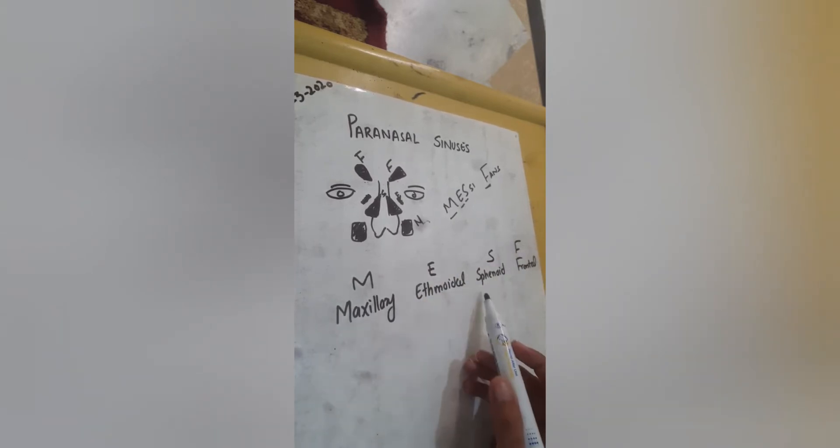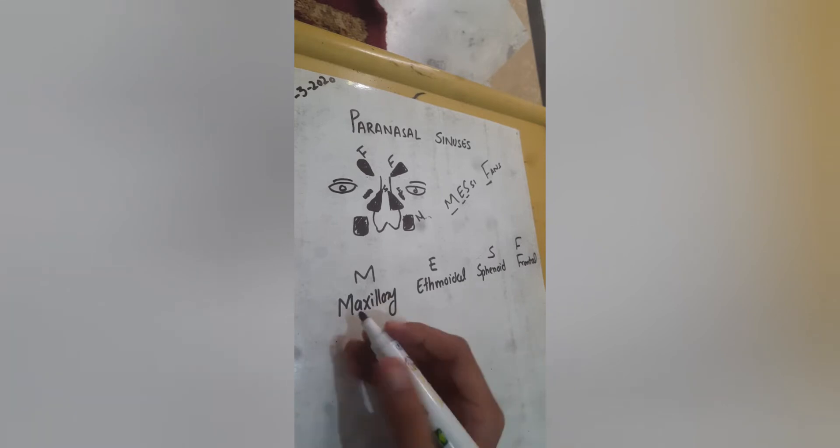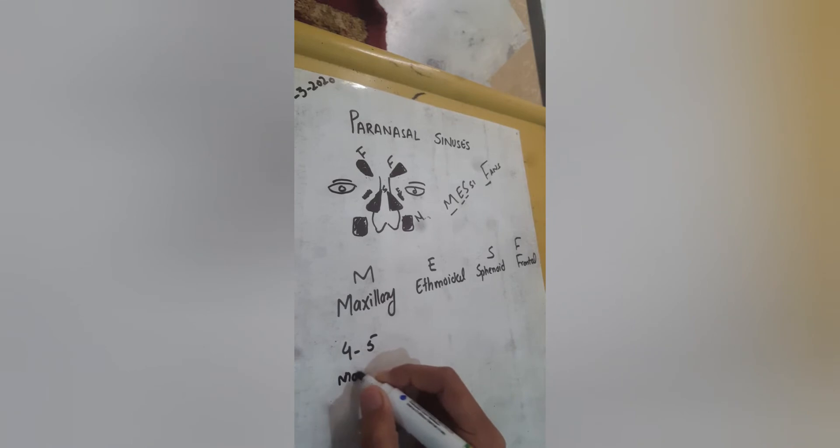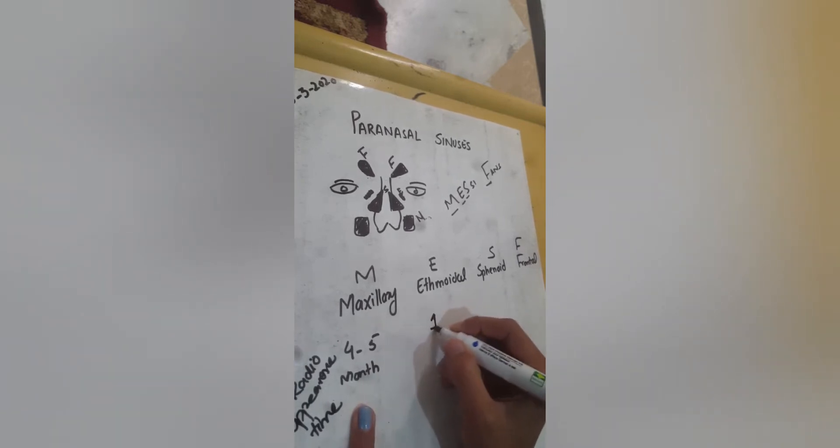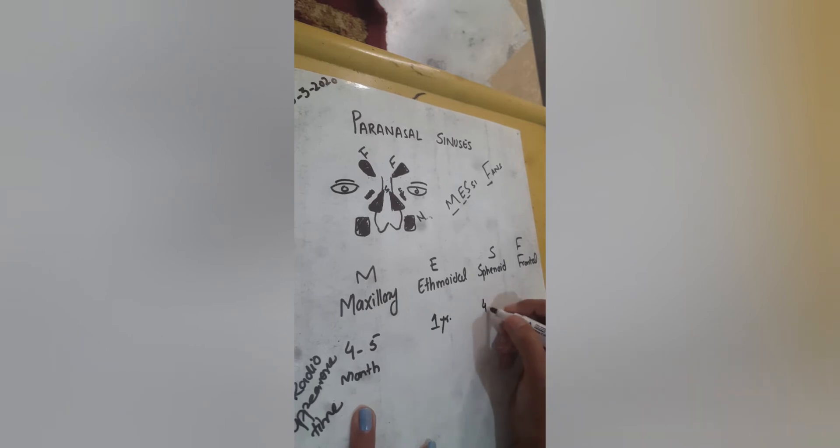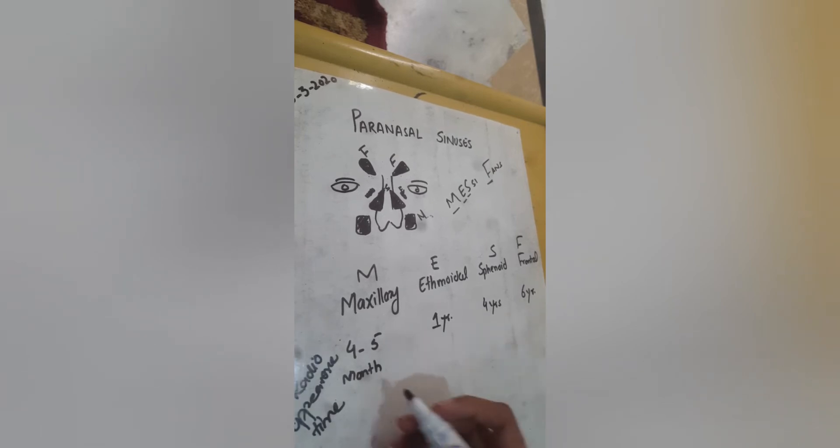MESF: Maxillary, Ethmoidal, Sphenoidal, and Frontal. Now, at what age are they going to appear on the radiograph? Maxillary at 4 to 5 months - we can see it on the radiograph at 4 to 5 months. Ethmoidal sinus at 1 year, sphenoidal sinus at 4 years, and frontal sinus at 6 years. This is the last sinus to be seen on the radiograph.